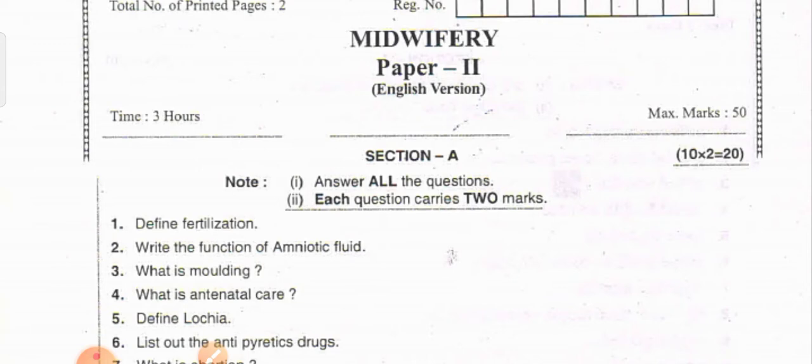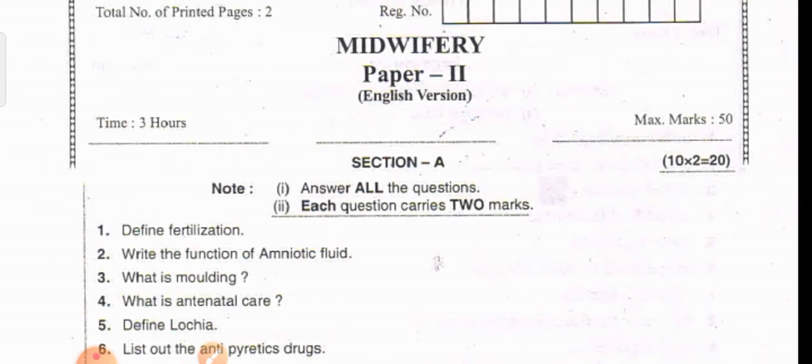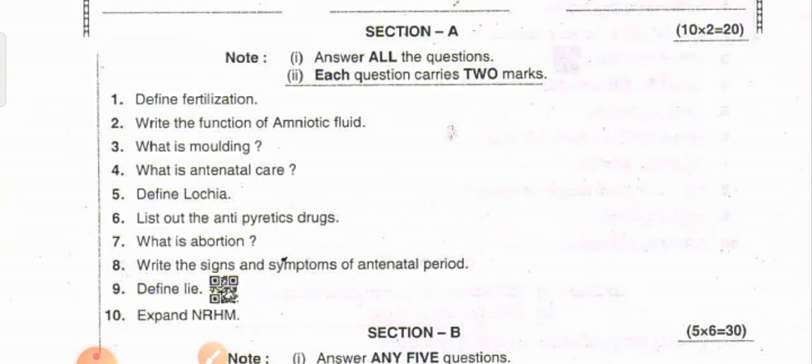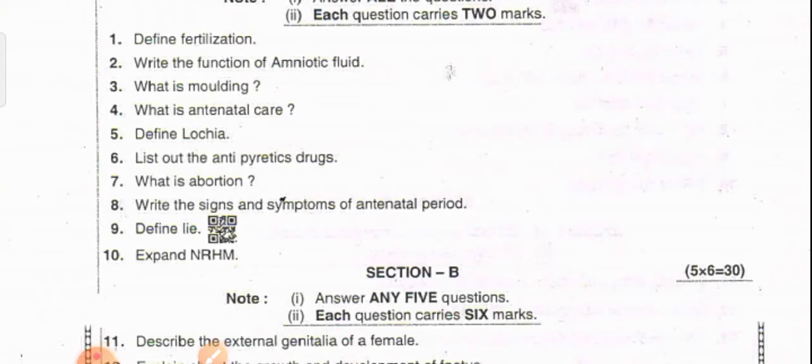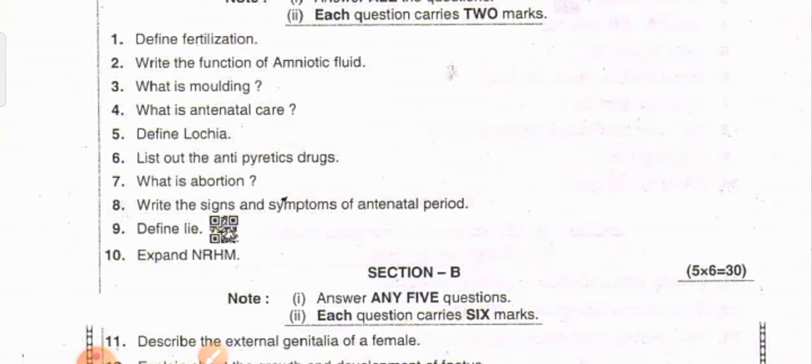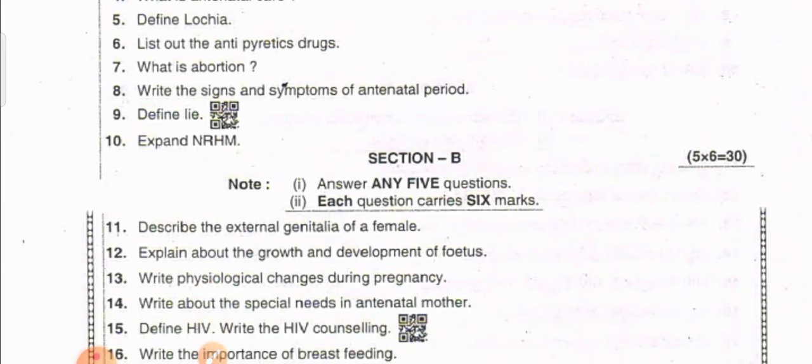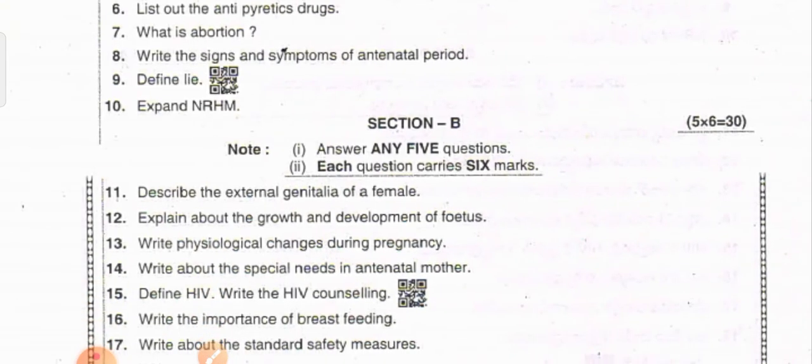Paper second year, paper 1. Section A questions: define fertilization, write the functions of the amniotic fluid, what is molding, what is antenatal care, define lochia, list out the antipyretics drugs, what is abortion, write the signs and symptoms of antenatal period, define life, expand NRHM.